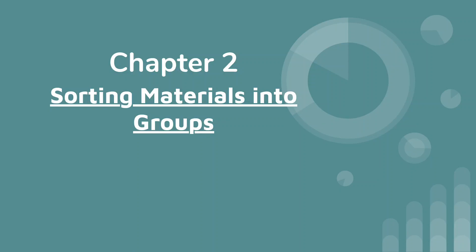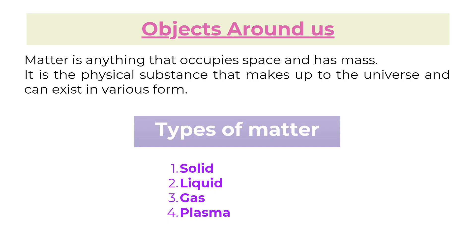Chapter 2: Sorting Materials into Groups. Objects around us. Matter is anything that occupies space and has mass. It is the physical substance that makes up the universe and can exist in various forms.